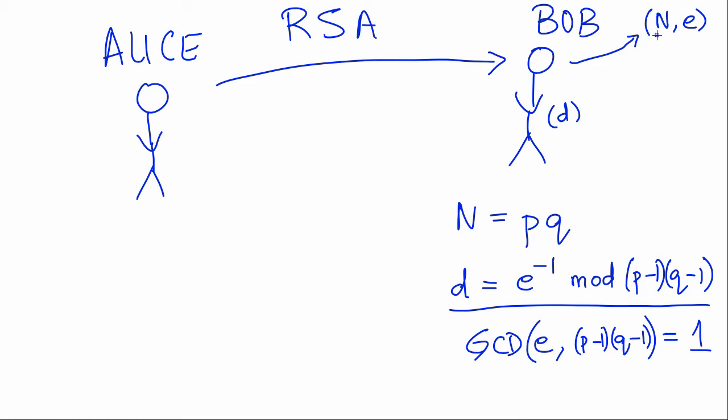Bob tells everyone his N and E. If there's a third person, Eve, she too can see Bob's N and E.